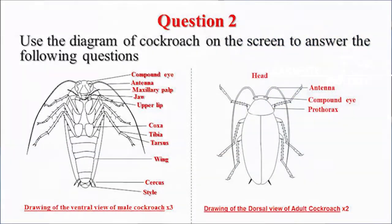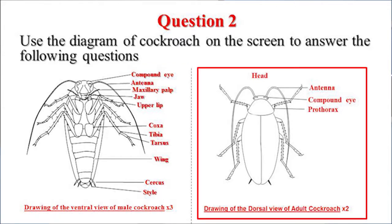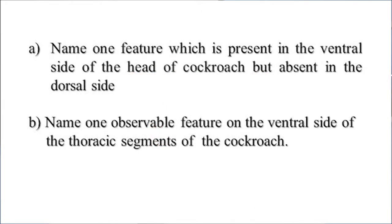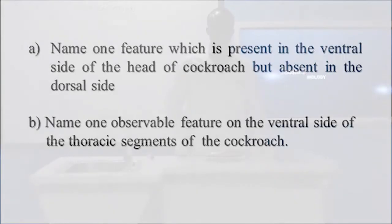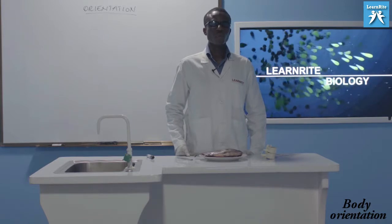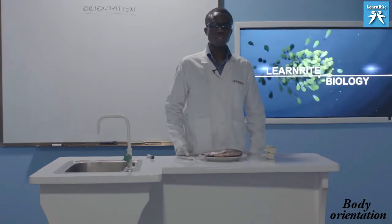Question two: use the diagrams of cockroach on the screen to answer the following questions. You can see two diagrams of the cockroach — the first one is the ventral view and the second one is the dorsal view. Question 2A: name one feature which is present in the ventral view of the head of cockroach but absent in the dorsal side. You have to be able to know which features are found on certain parts of the organism, otherwise you'll give an answer that will not earn a point.